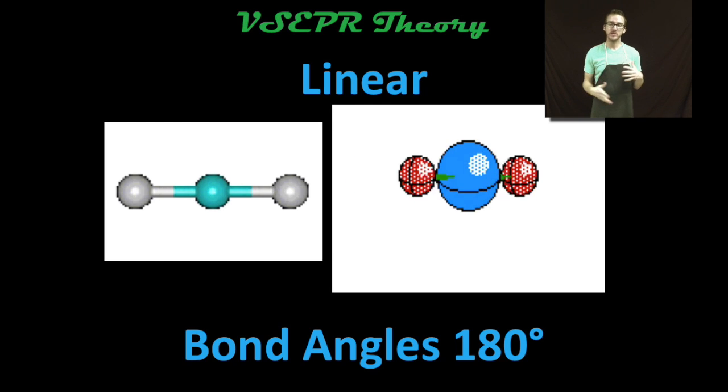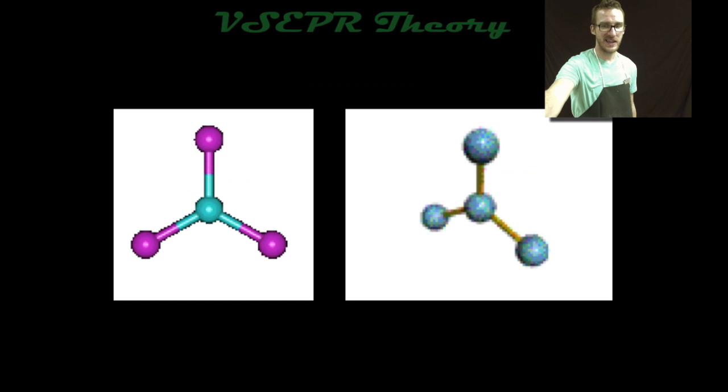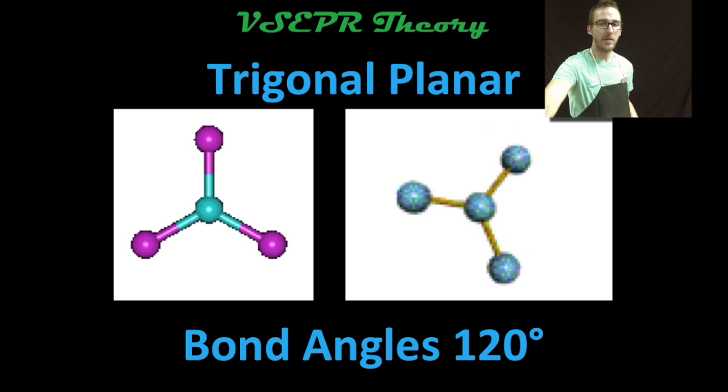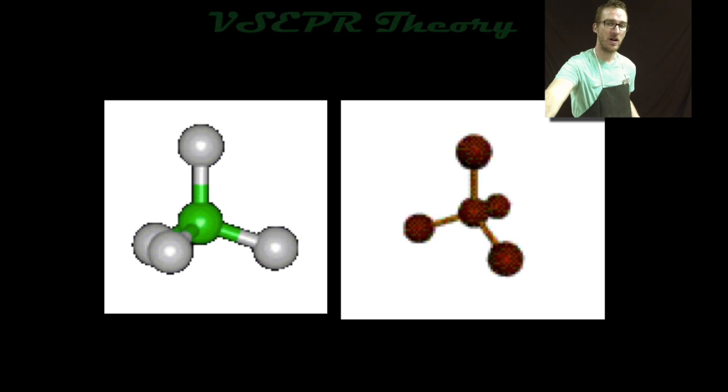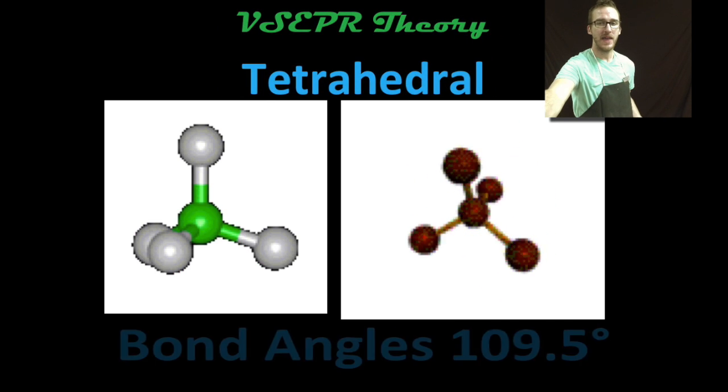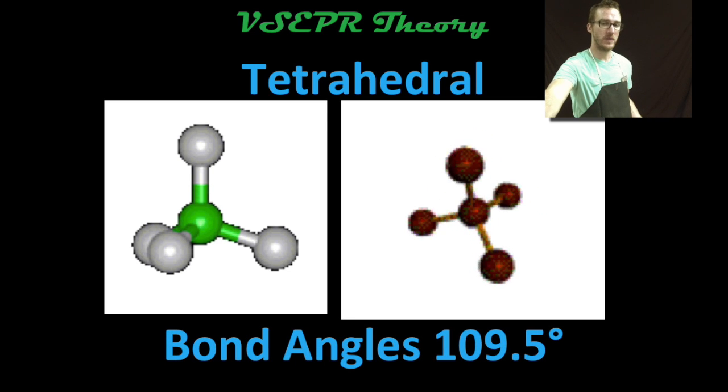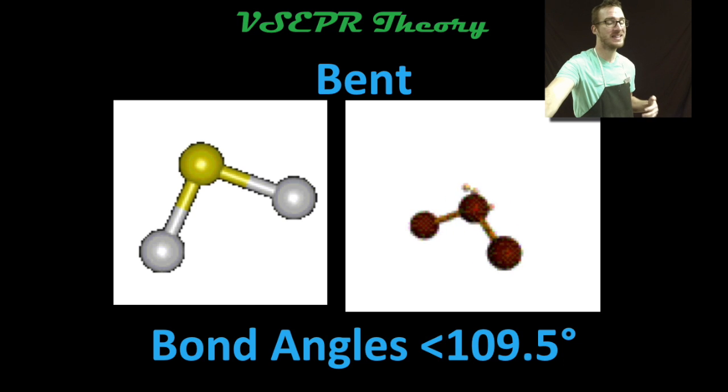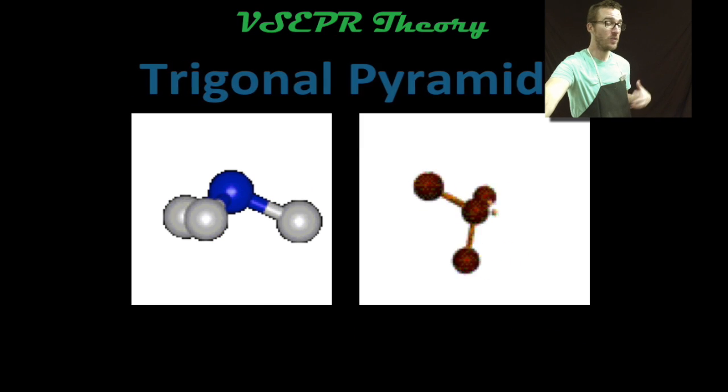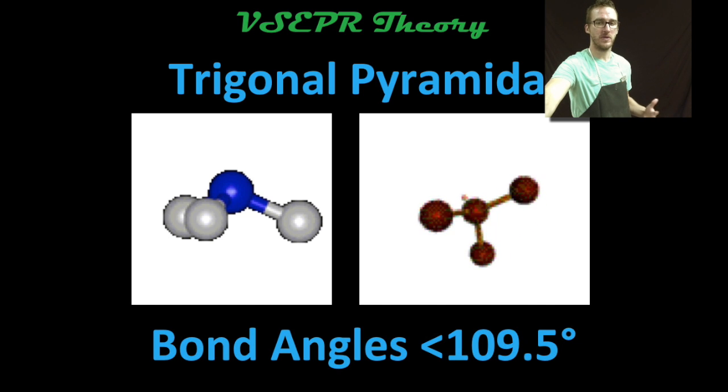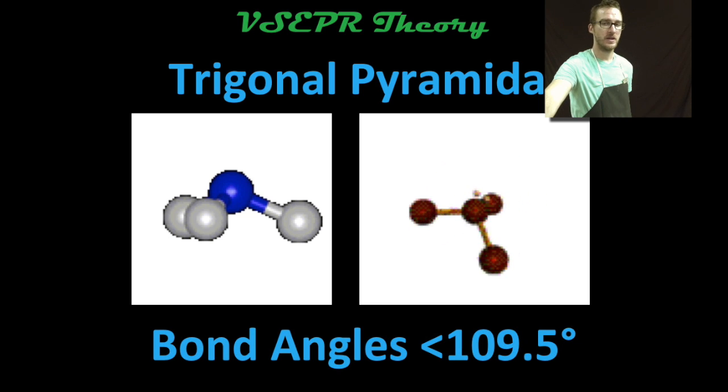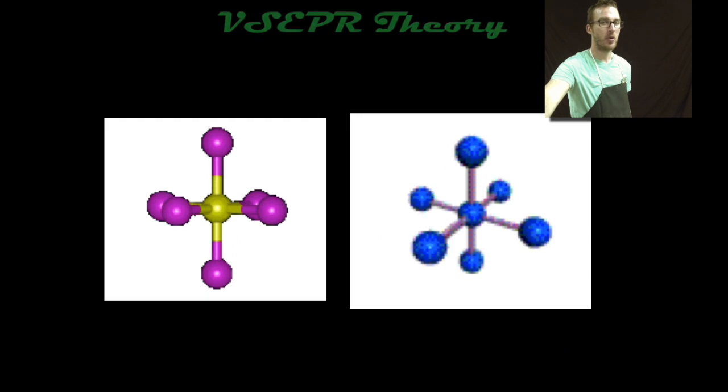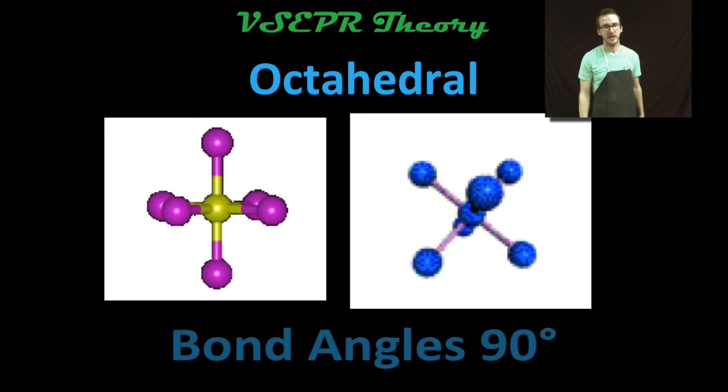And so ultimately then, we will use VSEPR theory to help us predict the different shapes of the molecules depending on how many total regions of electron density there are about that central atom, and then how many of those total regions are lone pair regions. Now VSEPR theory, like many things in chemistry, is something that just takes a little bit of time to practice, and once you practice it you're going to become really familiar with it and it'll be almost second nature to determine the shapes of your different molecules. So don't get scared off by all these crazy looking shapes. I promise you, with a little bit of practice this will become very easy.